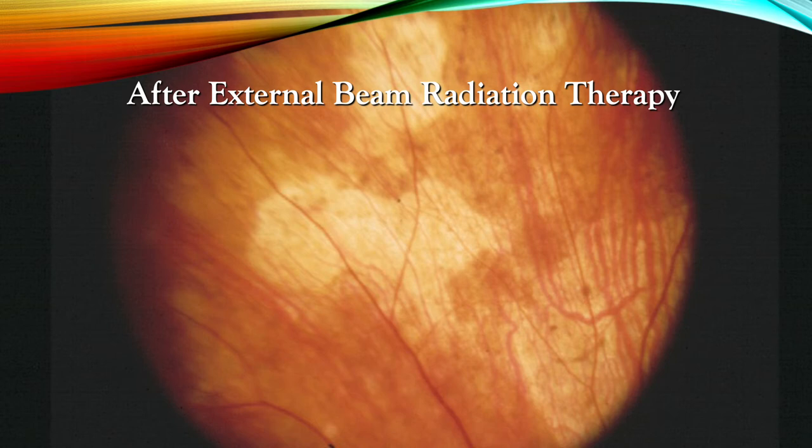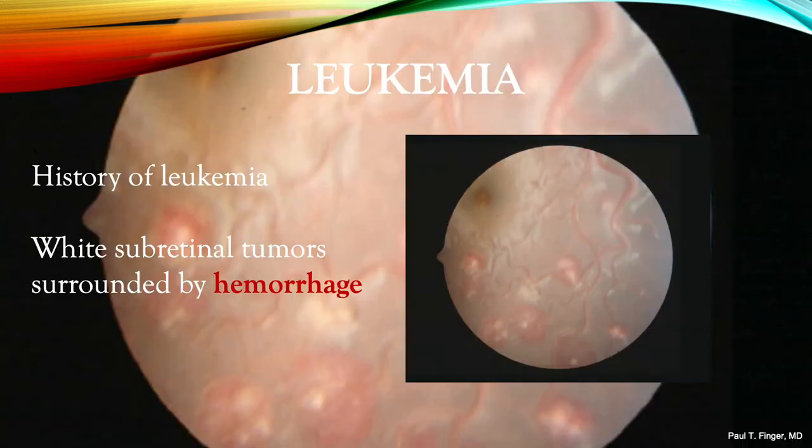The use of low doses rarely causes radiation retinopathy and allows retreatment should the disease recur. RPE atrophy is typically seen after tumor regression. Leukemia also affects the eye. It can present as direct infiltration of the anterior segment, vitreous, choroid, and retina. It can mimic uveitis, choroiditis, and retinitis. However, the retinal form typically demonstrates white subretinal tumors surrounded by hemorrhage.